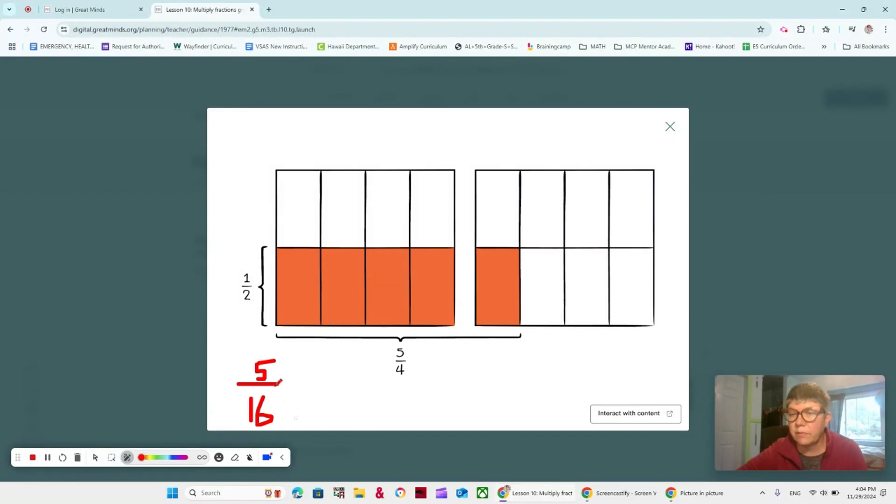How many squares do we have all together? 1, 2, 3, 4, 5, 6, 7, 8, 9, 10, 11, 12, 13, 14, 15, 16. So there are 5 out of 16 colored in.